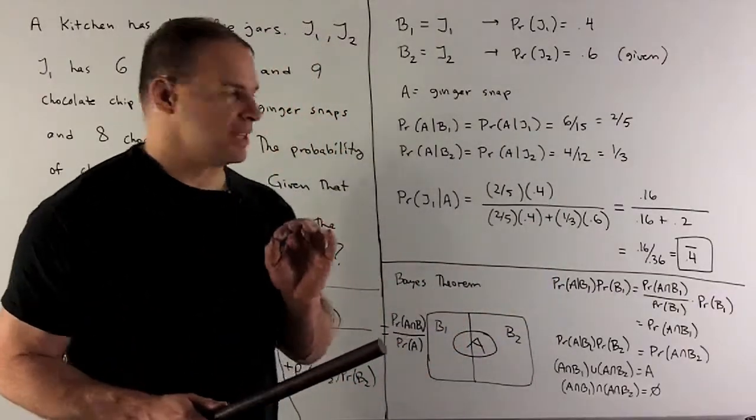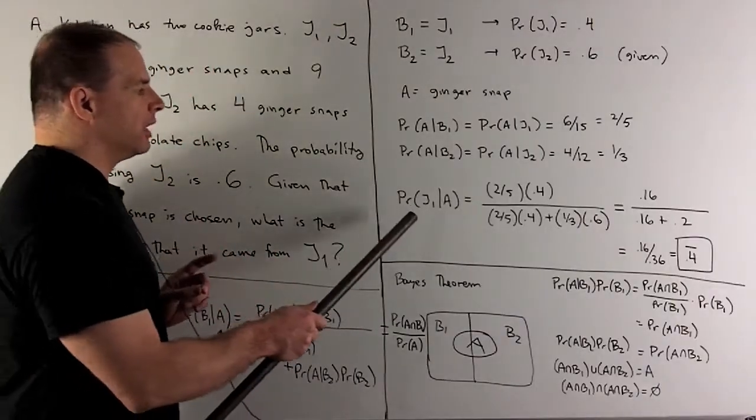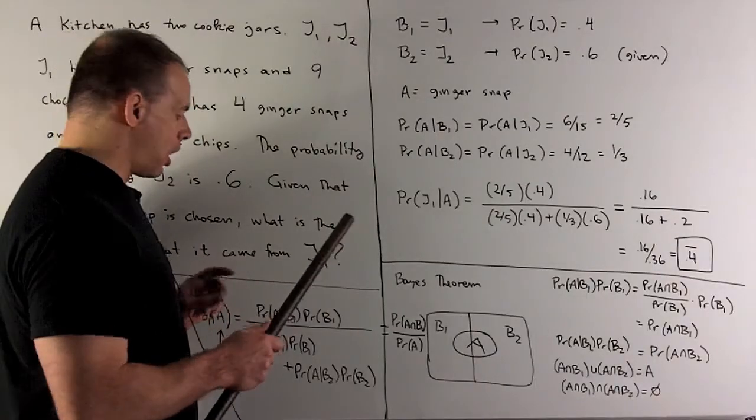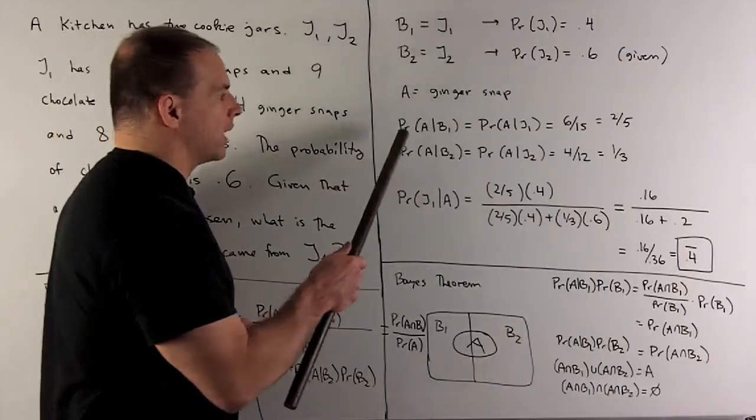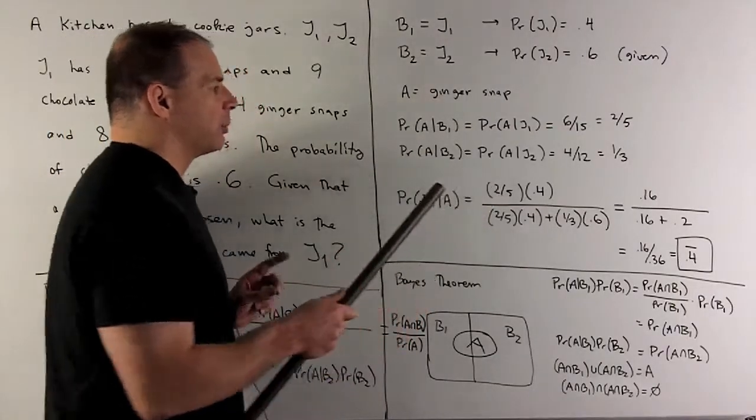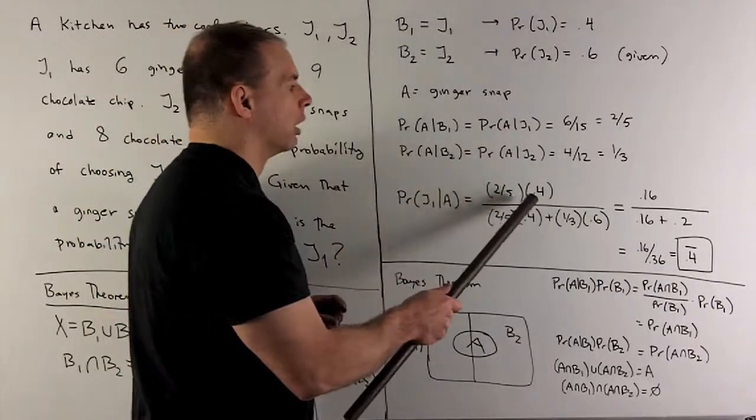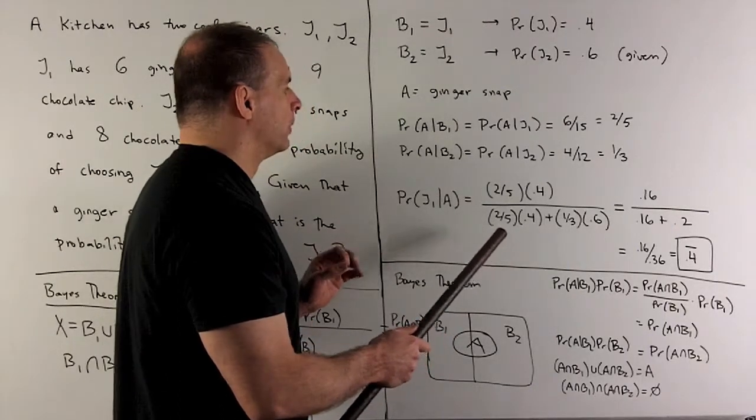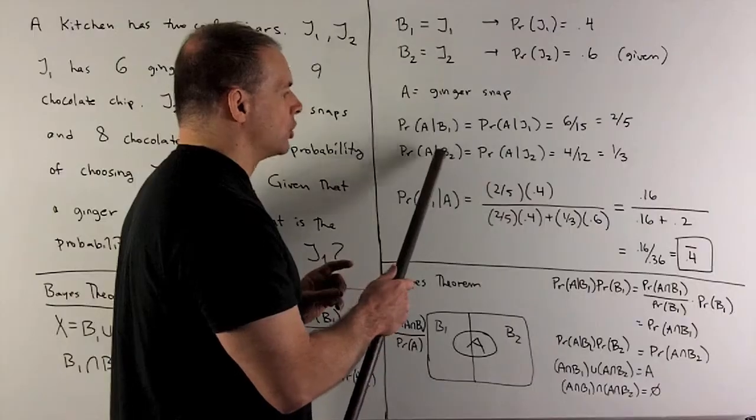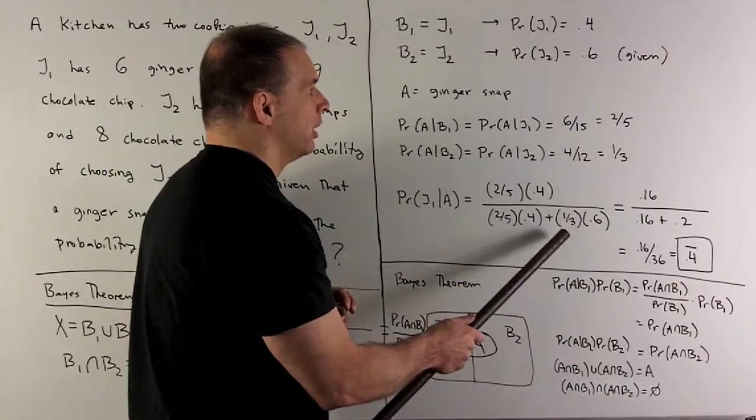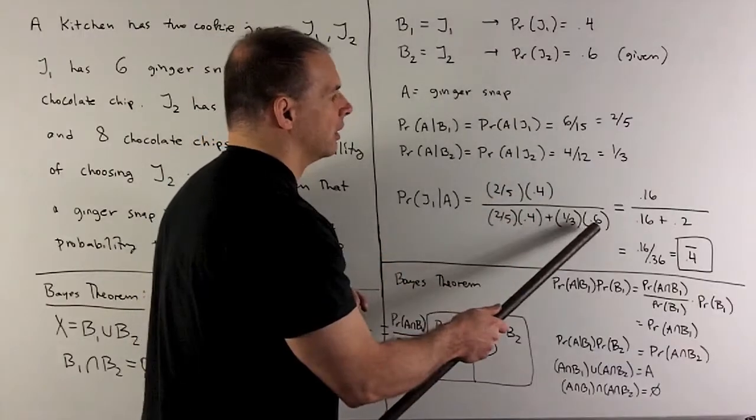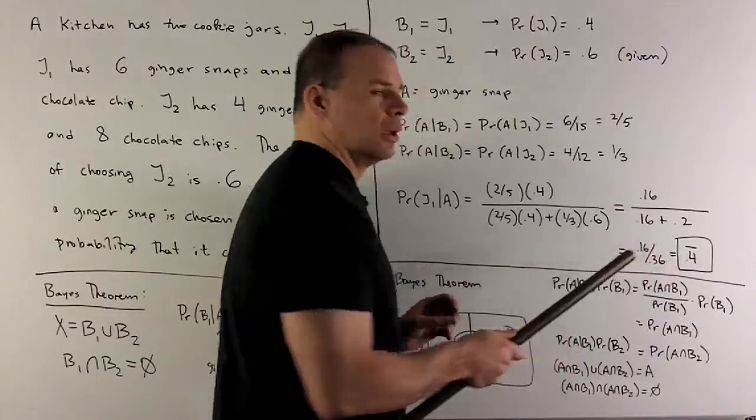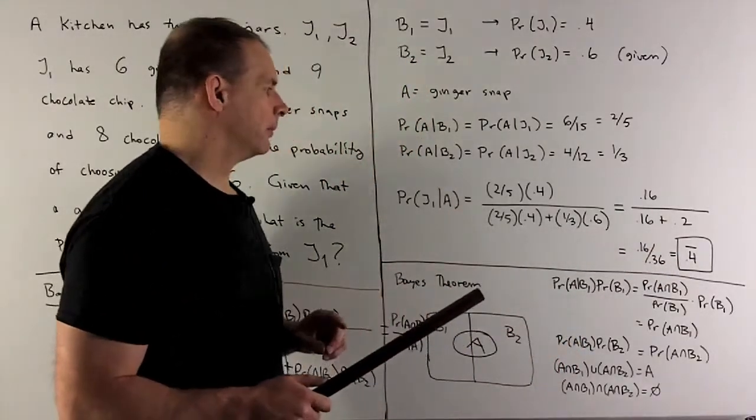Now we just plug into Bayes' theorem. So we're looking for probability of jar one given A, given that we have a ginger snap. So that's going to be our probability of A given jar one, so that's going to be two fifths. Then I just take the probability for jar one, so that's 0.4. We write it out again, and then we're going to do the same thing but only with jar two. So here, probability of a ginger snap given jar two, it's going to be one third. And then the probability of jar two is 0.6. Now I can just compute. So I crunch my numbers down, and then I wind up with 0.444 repeating. So that's our answer.